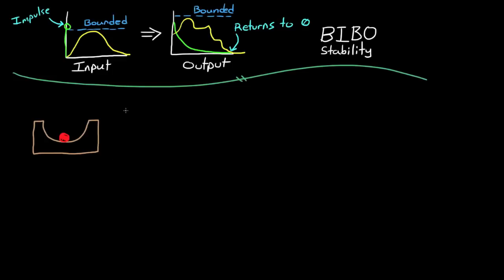If the ball is disturbed with a force that pushes it away from its equilibrium point, then the ball will start to oscillate. And if there's friction, eventually come to rest back at the equilibrium point. This is a stable system.